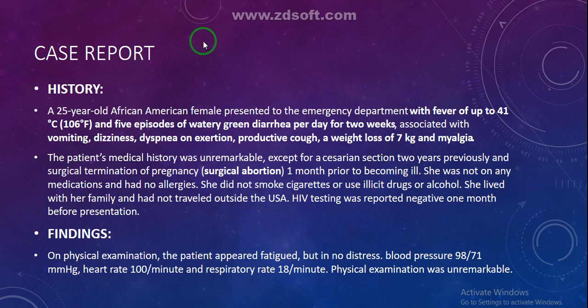Here is the case report: the patient is a 25-year-old American female who presented to the emergency department with a fever of up to 106 degrees Fahrenheit and five episodes of watery green diarrhea per day for two weeks. She also has symptoms of vomiting, dizziness, dyspnea or shortness of breath on exertion, productive cough, a weight loss of 7 kg, and myalgia, which is muscle pain.